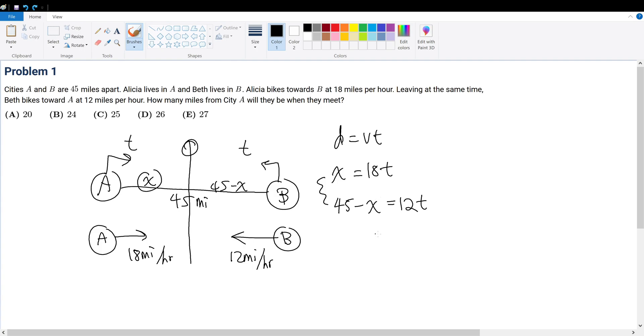We have two variables and two equations. Substituting x = 18t: 45 minus 18t equals 12t. Therefore 30t equals 45. Dividing by 5 on both sides gives 6t equals 9, so 2t equals 3.